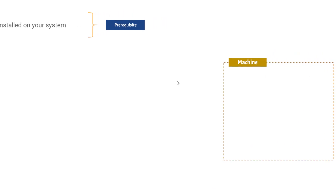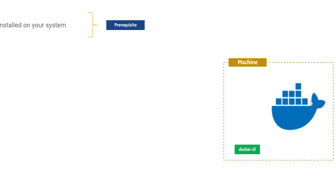Let's say we have a machine and Docker is installed there. There is a Docker CLI and this Docker CLI is present inside the machine only. This Docker CLI can interact with the Docker server or Docker engine using a unique socket — basically a tunnel between Docker and the Docker CLI.